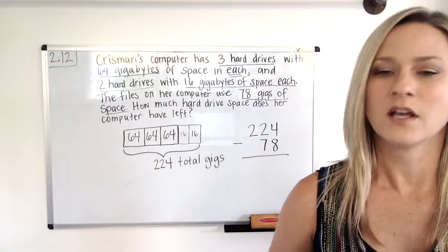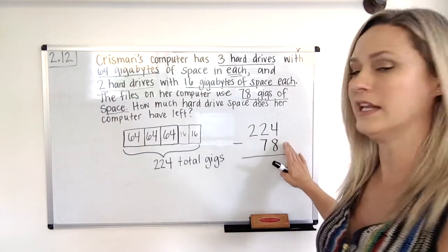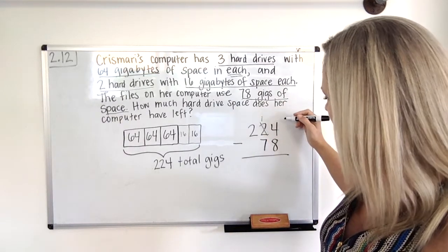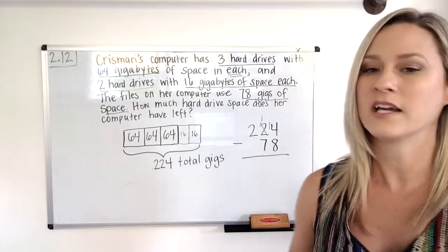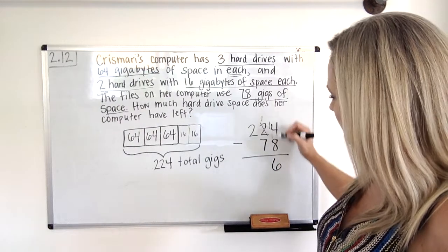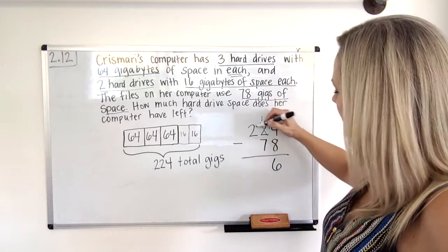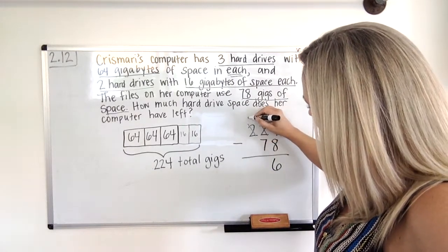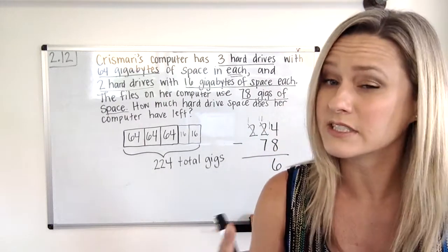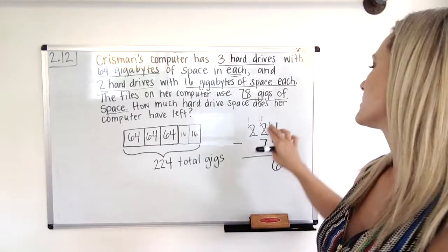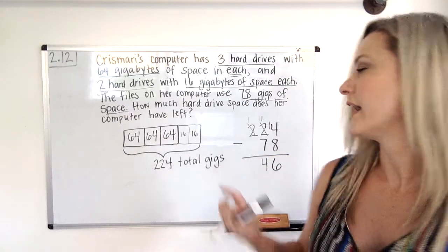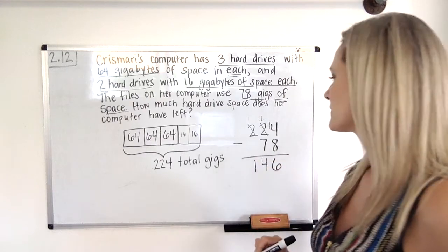Okay, so we know we're going to be doing 4 minus 8. And that will give us a negative number. So we're going to just borrow a 10 from over here. So that's going to become a 1. And this is going to be 14 minus 8. And 14 minus 8 is 6. Alright, now we've got 1 minus 7. Again, that would give us a negative number. So I'm going to cross off my 2 in the hundreds place. I'm going to take 100 and move it over here. So I have 11 minus 7. Now that would give us what? Four tens left. And then we still have 1 minus nothing is 1.